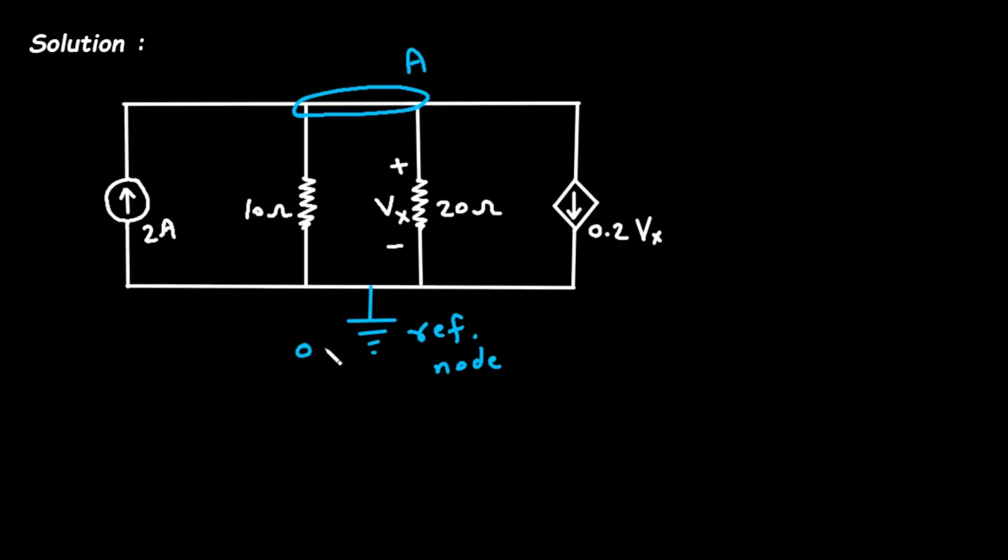The voltage of this reference node is zero volt. So we have to assume all the currents towards this reference node. Now this is two ampere current and let's say this is current I1, this is current I2. We are assuming these two currents towards this reference node and this current is also downward.